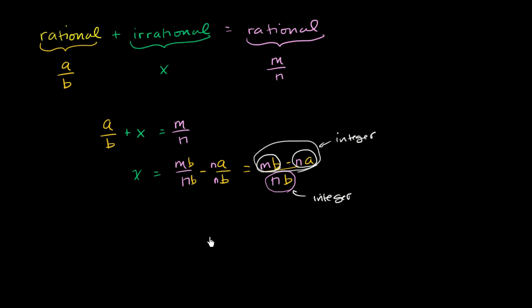So assuming the sum is rational, we have a contradiction. We assumed x is irrational, but because we made that assumption, we're able to represent it as the ratio of two integers. This tells us x must be rational.